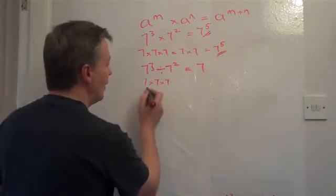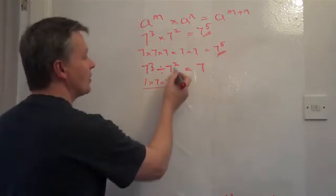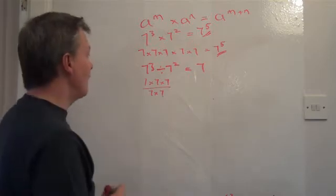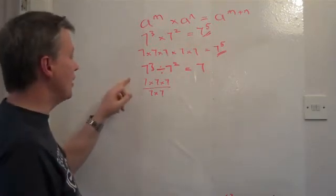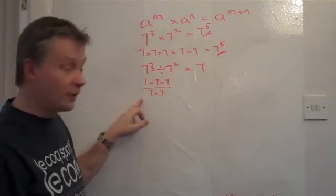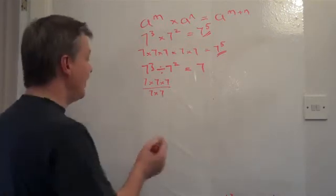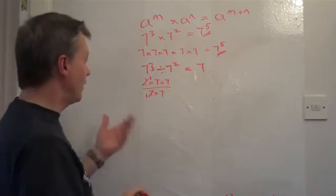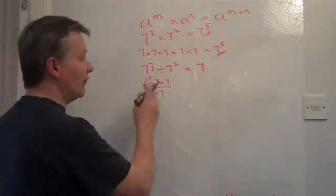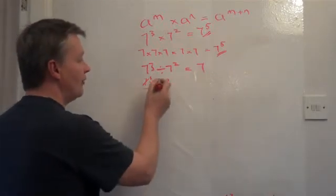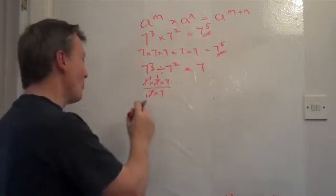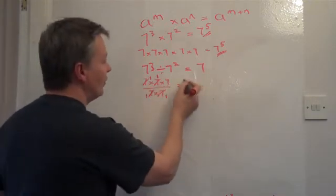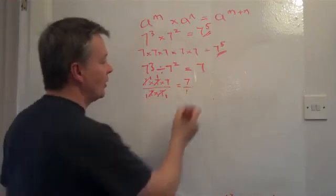I'm going to write the division differently — as a fraction, putting the division underneath. So 7 cubed is 7 times 7 times 7 on top, and 7 squared is 7 times 7 on the bottom. I'll divide through the top and bottom by 7, giving 1, then divide through again by 7, giving 1 again. I'm left with 1 times 1 times 7 on top, divided by 1 times 1, which equals 7.